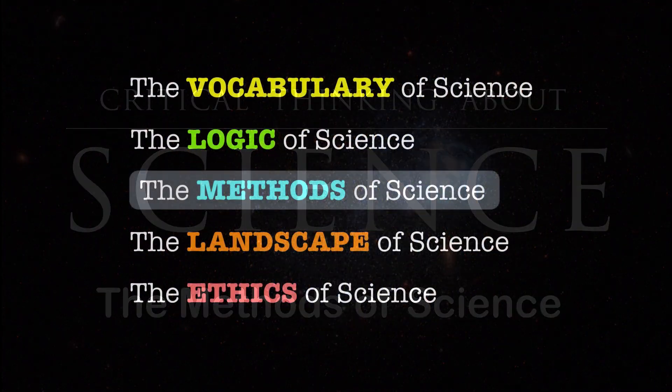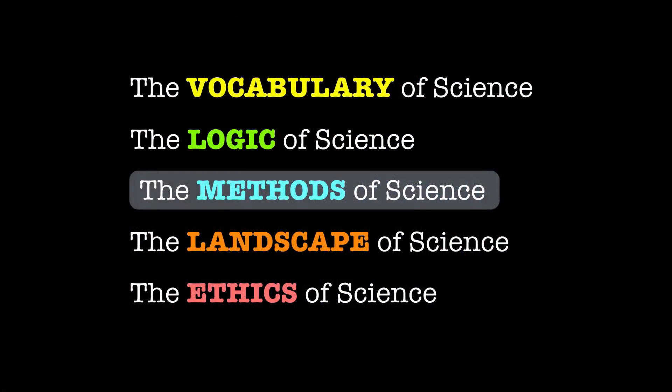We're moving down our list, introducing each of the five units in our proposed curriculum for science literacy. This unit is the methods of science. Right away, some of you watching are asking how the methods of science differs from the logic of science. If you studied a little philosophy of science, it's even more likely to confuse you, because there's a long tradition in philosophy of science of treating the logic of science as a synonym for the methods of science — the methods that scientists use to answer questions are viewed as just another way of talking about the logic of scientific reasoning.